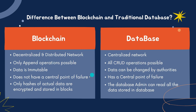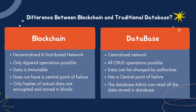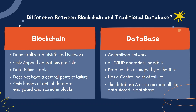Blockchain does not have a central point of failure, whereas a database has a central point of failure. In blockchain, only hashes of actual data are encrypted and stored in blocks. In a database, the database admin can read all the data stored. So although blockchain data is transparent, what actually happened is hashed and encrypted — what we saw as a transaction hash — but in a database the admin has access to everything and can do whatever they want with your data. That is the key difference between blockchain and the traditional database.